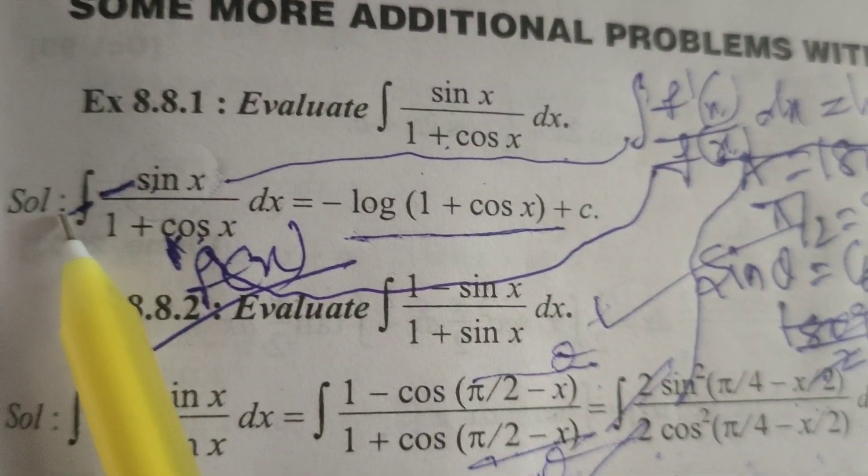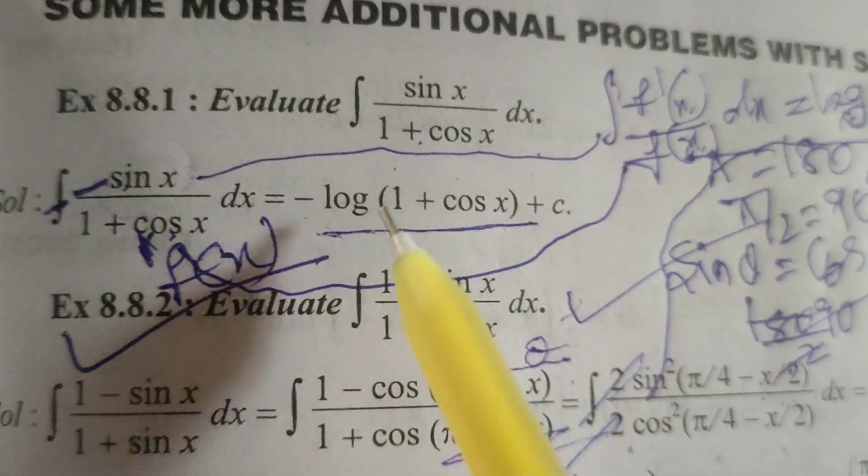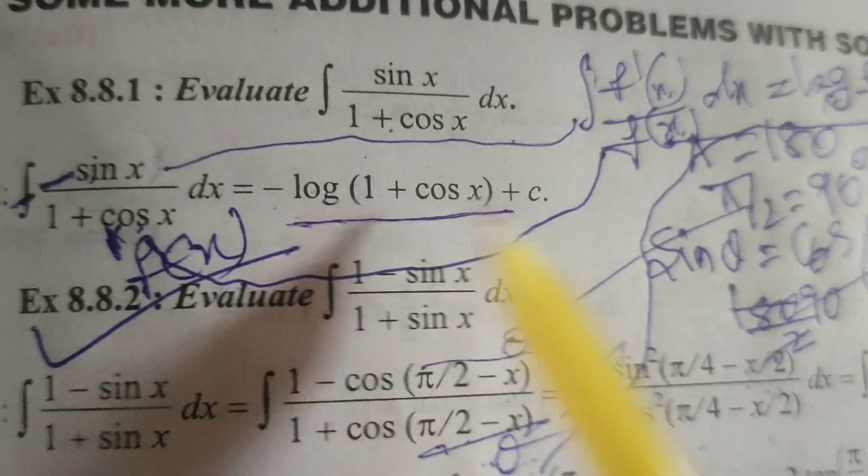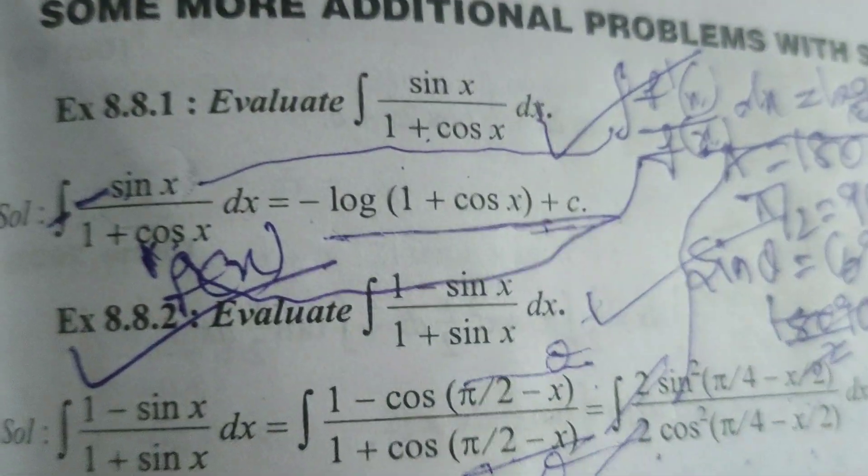Here in this before, divided by minus, we write here minus log of 1 plus cos x plus c. This is the solution by this evaluated integral.